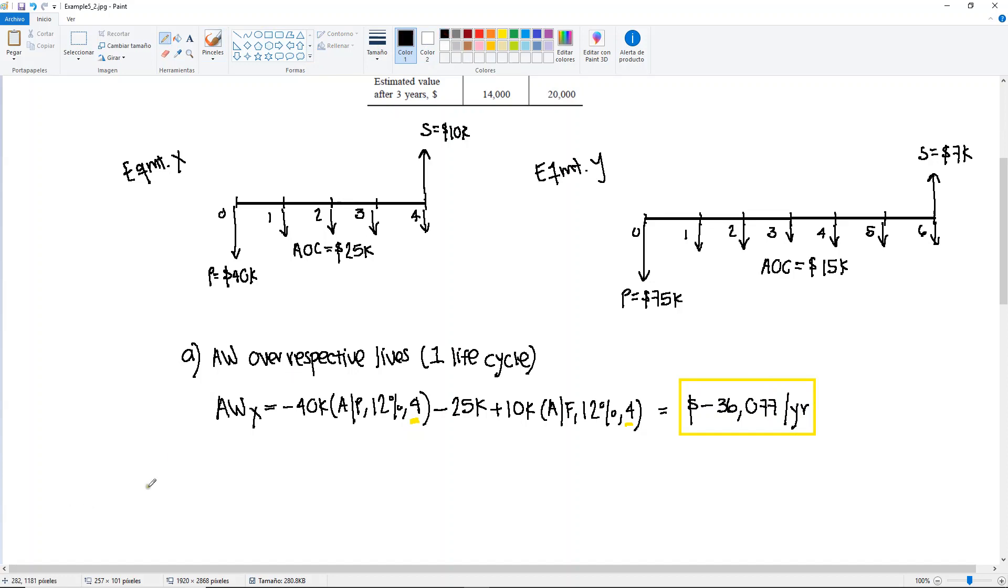Now, let's calculate, do the same, follow the same process. So we calculate the annual worth for alternative Y. It's going to be minus $75,000 for the present. Find A given P, 12%. But pay attention to this because it's going to be for six years. Your AOC doesn't change, so we just added, or in this case subtracted here, minus $15,000. Plus the salvage value, $7,000. Find A given F at 12%, and this is also for six years. So you will end up getting minus $32,380 per year. Just to point out, the Ns will be different.